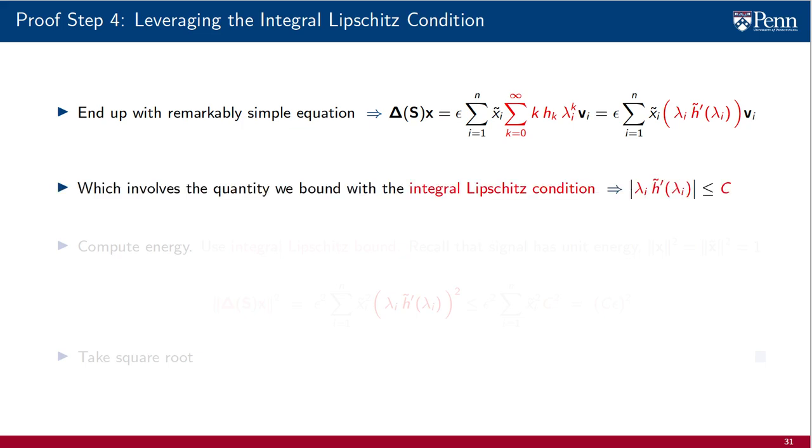This expression involves the quantity we bound with the integral Lipschitz condition. We therefore need to reduce the expression in the first line to a form that allows us to use the bound on the absolute value of λᵢ times h̃' of λ.